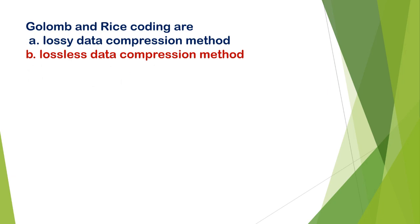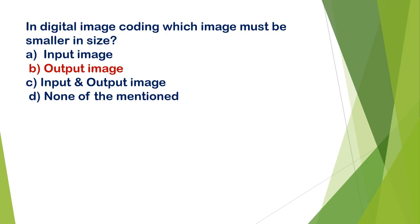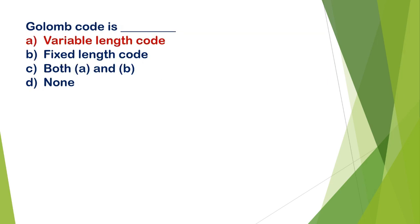Next question: Golomb and Rice coding are A) a lossy data compression method, B) a lossless data compression method. The correct answer is option B, lossless data compression. In digital image coding, which image must be smaller in size: A) input image, B) output image, C) input and output image, D) none of the mentioned. The correct answer is option B, output image.